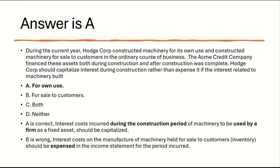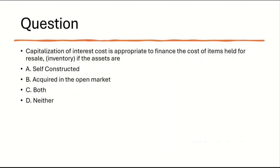The answer is A. Interest cost incurred during the construction period of machinery to be used by a firm as a fixed asset — that interest should be capitalized. B is wrong — interest cost on the manufacture of machinery held for sale to customers is inventory, and that interest should be expensed in the income statement for the current period. Only on the machinery for its own use, not on machinery being built for sale to customers. The answer is A.